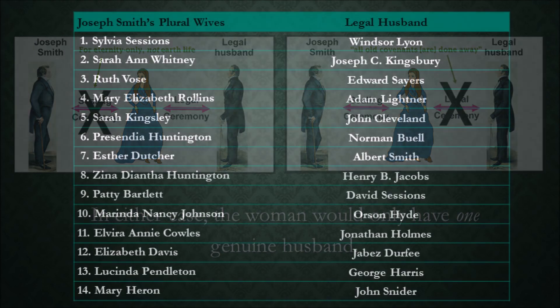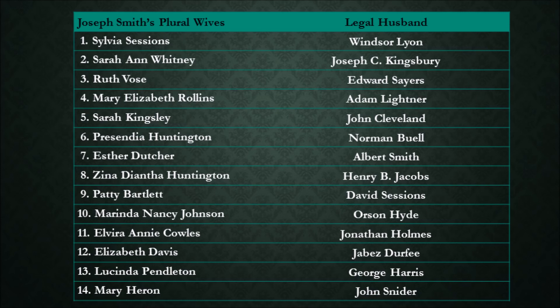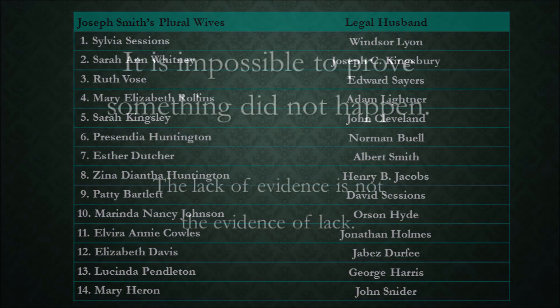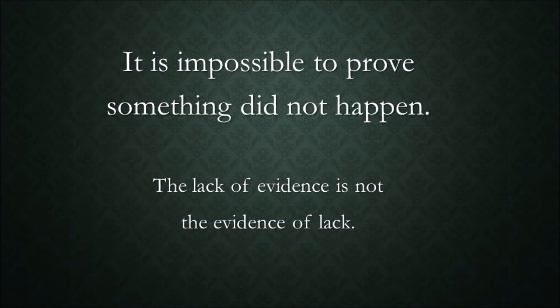In either case, the woman would have only one husband after the ceremonies. It appears that all of Joseph Smith's 14 sealings to legally married women fall into one of these two categories. But the author of the CES Letter does not investigate any of them. Perhaps the strongest supportive evidence for polyandry is that it is impossible to prove something did not happen. The lack of evidence is not evidence of lack. So while we will examine the evidence in this video, there is no way to prove polyandry did not occur.